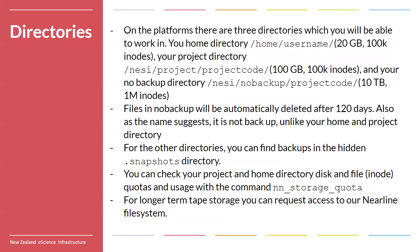Now that you know how you'll be transferring data, where exactly will you be transferring it to? Once you've got your account, you will have a user account which will by default have a home directory — every single user has a home directory only accessible by you at `/home/username`. It has a default disk space of 20 gigabytes and a default inode limit of 100,000 inodes — inodes are essentially files, so that's a file limit. We don't really want you doing too much work in your home directory; it's mostly there for users who want to set up their own aliases and shortcuts in their `.bashrc` and `.bash_profile`. You can do some basic tests and store some small things in your home directory, but generally we want you to be doing most of your work in your project directory.